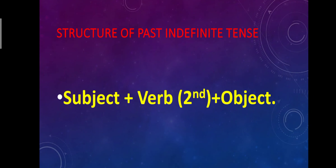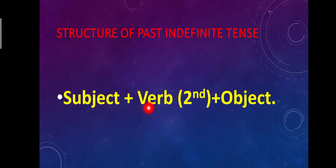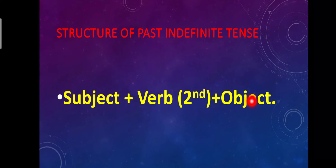Now, the structure of Past Indefinite Tense: Subject + Second Form of Verb + Object. Its structure is very easy. After the subject, the second form of the verb is used. This is the tense where the second form of the verb is used, and then the object follows.